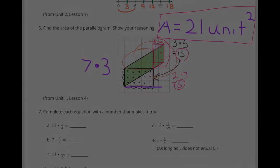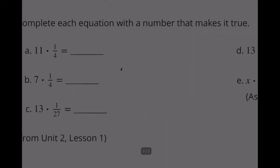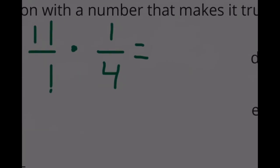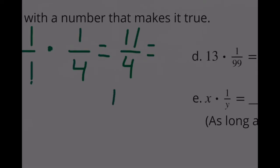Problem 7: Part A: 11 times one-fourth equals eleven-fourths, which is the same as 11 divided by 4. Four goes into 11 twice with 3 left over, so the answer is 2 and three-fourths.